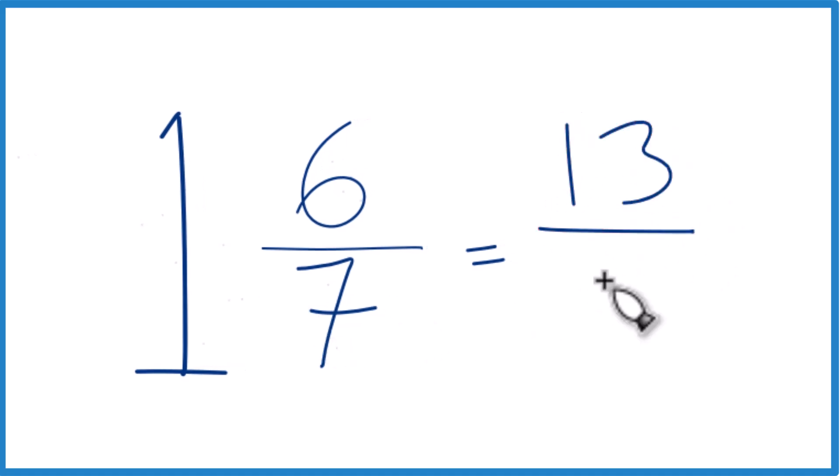So we have 13, then we bring the 7 across, and the improper fraction 13 sevenths is the same as the mixed number 1 and 6 sevenths. They have the same value, just represented differently.